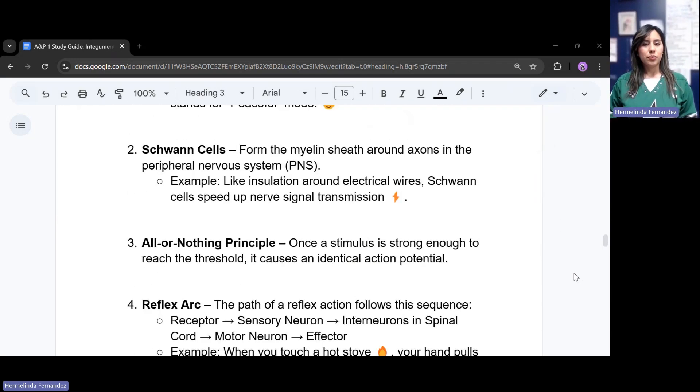Schwann cells form the myelin sheath around those axons. This is in the peripheral nervous system, PNS. Like insulation around those electrical wires, the Schwann cells speed up those nerve transmissions. Think about some headphones or a charger. You have underneath that little part those electrical wires. All the Schwann cell does is it forms this myelin sheath so we can protect it.